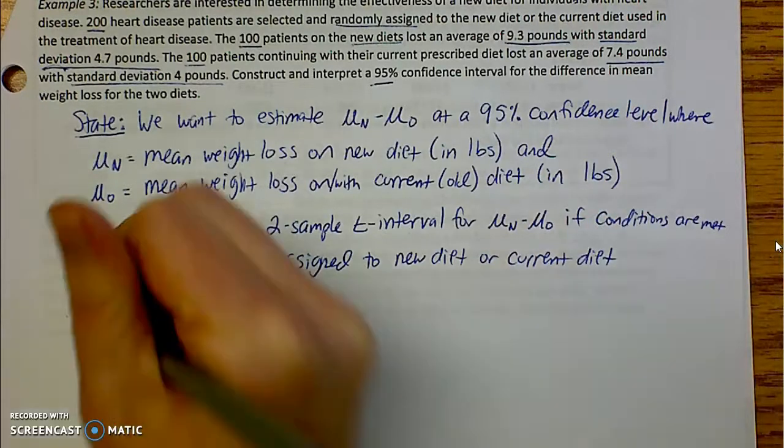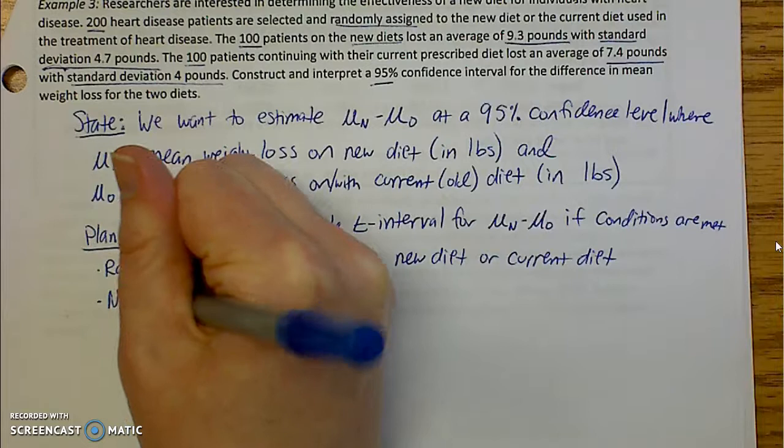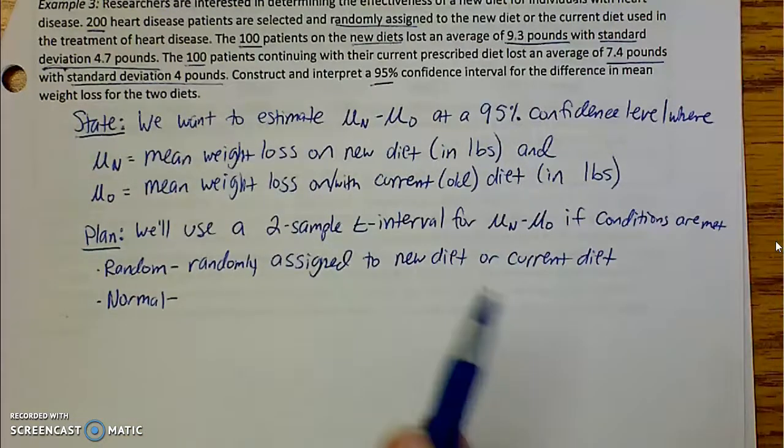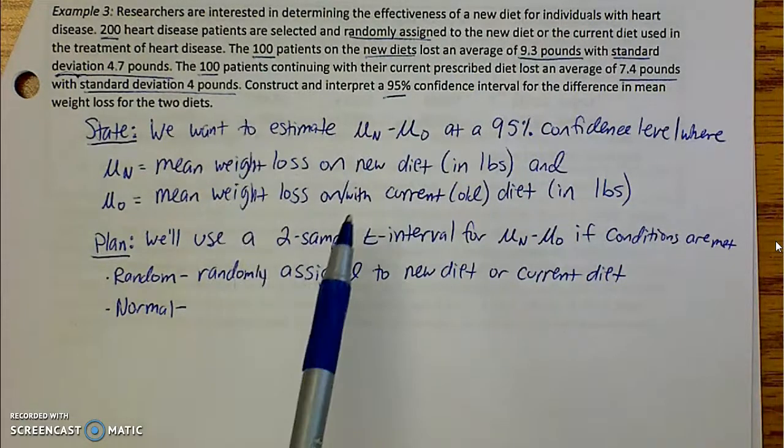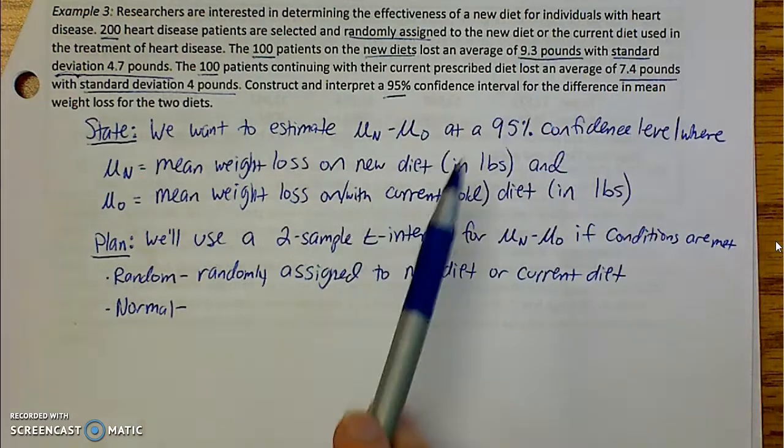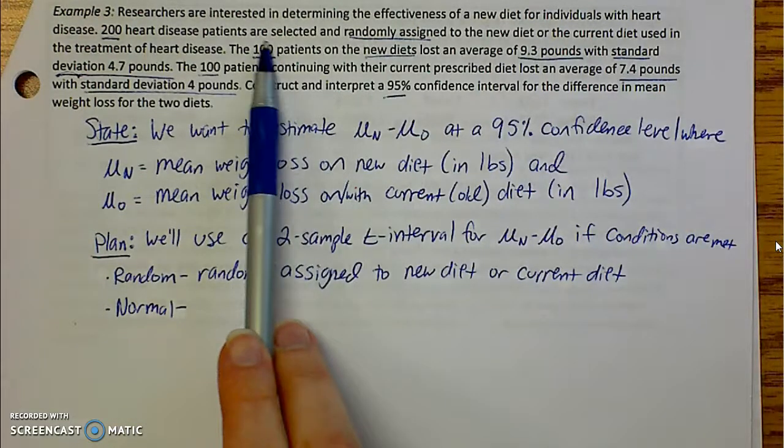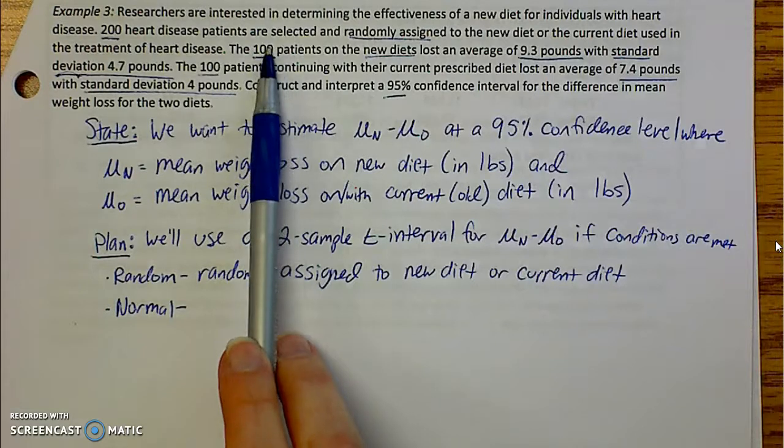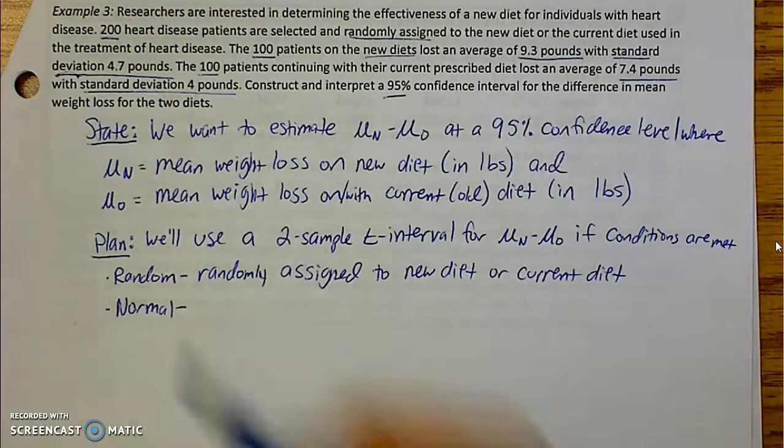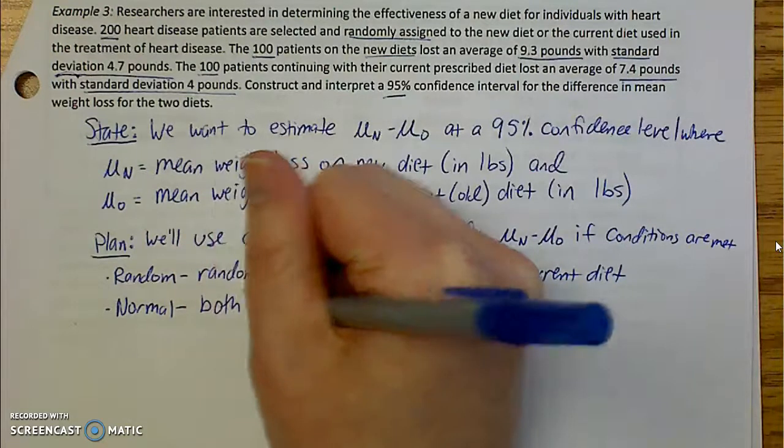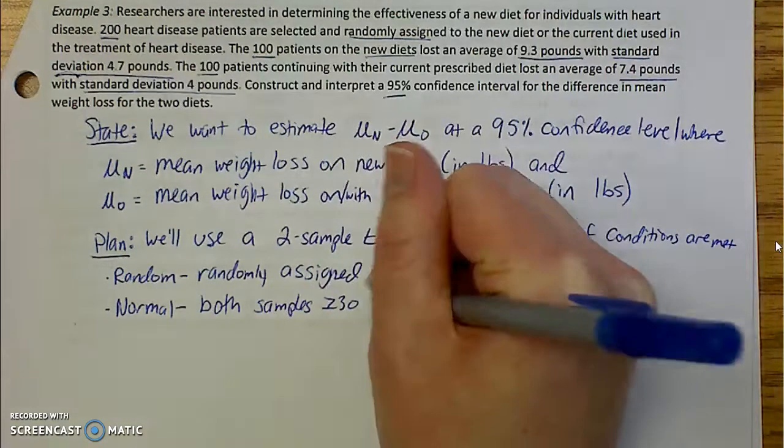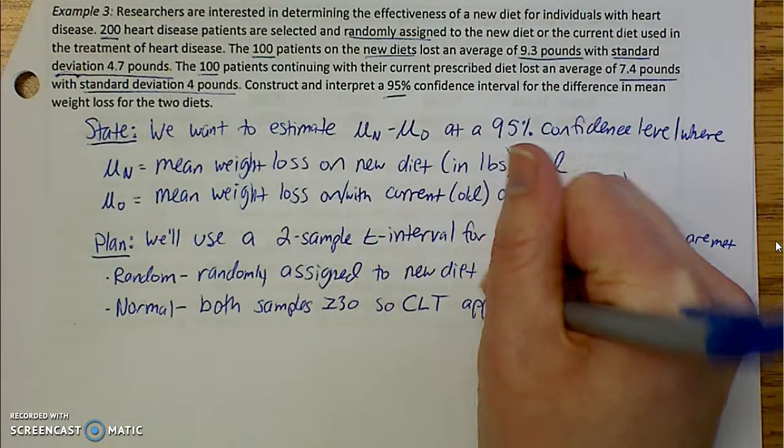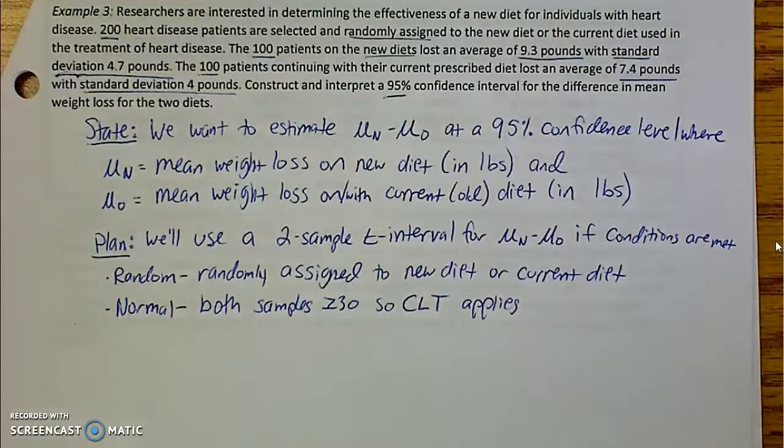Next comes normal. So we need to check out, did it say anything about it being normally distributed for the population? No, it did not. So we need to check the sample sizes. One sample size or one group of the experiment was 100. The other group of the experiment was also 100. So central limit theorem kicks in. So both samples are greater than or equal to 30. So I can say central limit theorem applies and I know that it's going to be an approximately normal distribution.